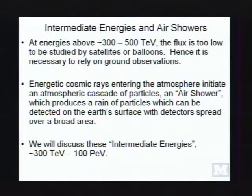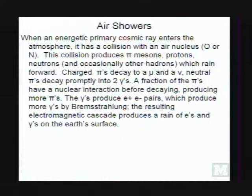Above 300 to 500 TeV, the flux is too low to be studied by satellites or balloons, so we must use ground-level observations. Energetic cosmic rays entering the atmosphere initiate what are called air showers, which produce a rain of particles detected on the Earth's surface with detectors spread over a broad area. We'll talk about these intermediate energies from 300 TeV to about 100 PeV.